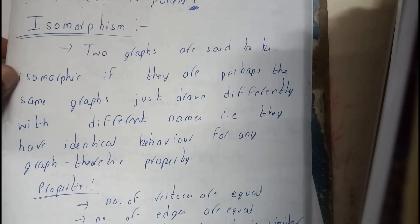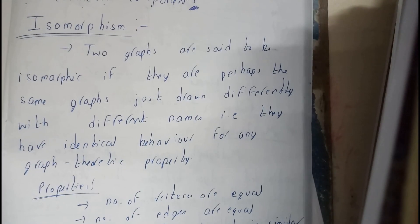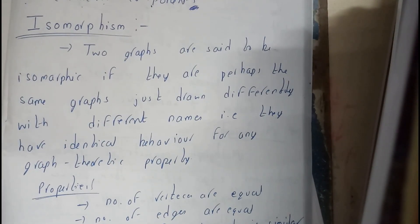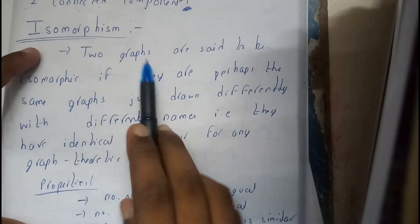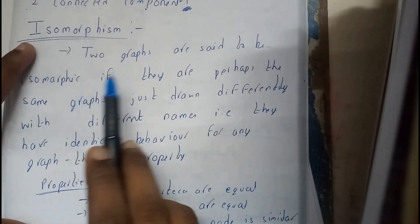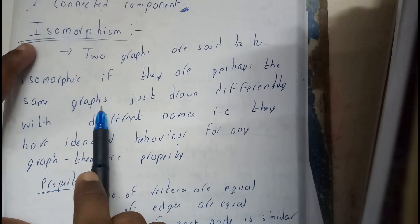In this tutorial let's see what is isomorphism of a graph. To be clear, isomorphism means similar in normal words. We can say that two graphs are isomorphic, hence that both are similar, they both are the same. Two graphs are said to be isomorphic if they are perhaps the same graphs just drawn differently with different names.